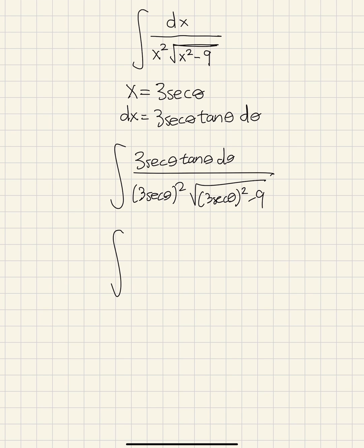This leads us to 3 secant theta tan theta d theta over 9 secant squared theta 9. We're going to factor it out, so we get secant squared theta minus 1.